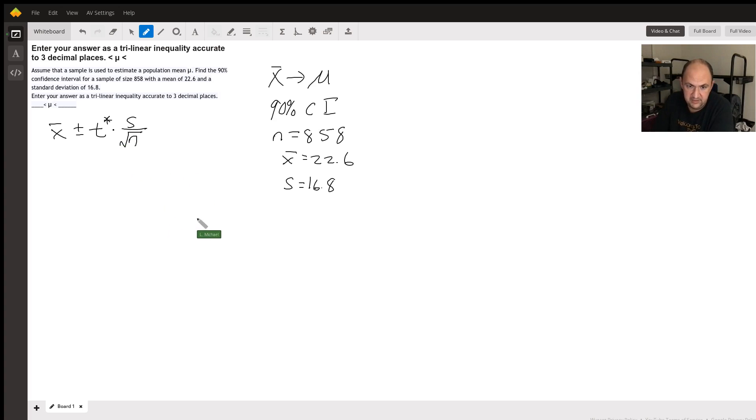For the t-distribution, since n is 858, the degrees of freedom is one less than that, which is 857. For 90% confidence, I want the middle area to be 0.90, and each tail would have 0.05 because there's 10% remaining and half is in each tail. In the calculator, the total area up to where t* is would be 0.95, because you have 0.05 to the left and 0.90 in the center.